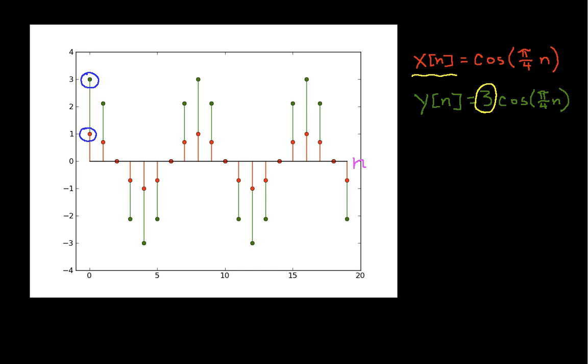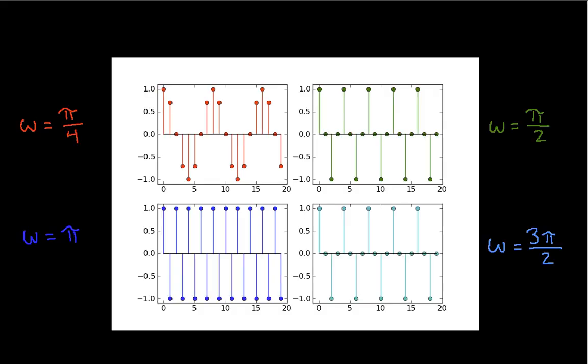So that's an example of amplitude. Frequency basically tells us how fast the signal wiggles. But with discrete time and frequencies, you get something interesting happening. Let me illustrate with this picture.